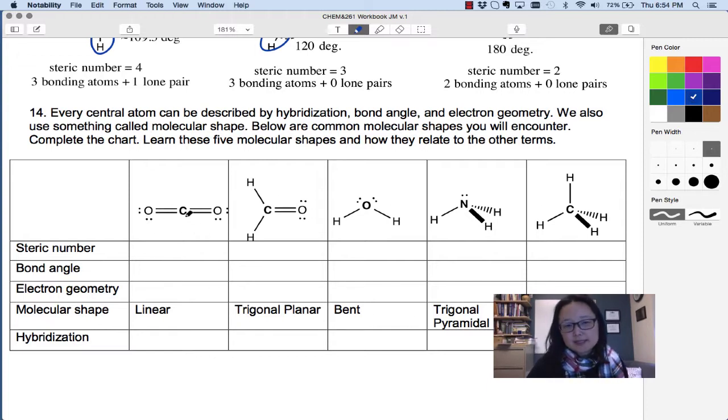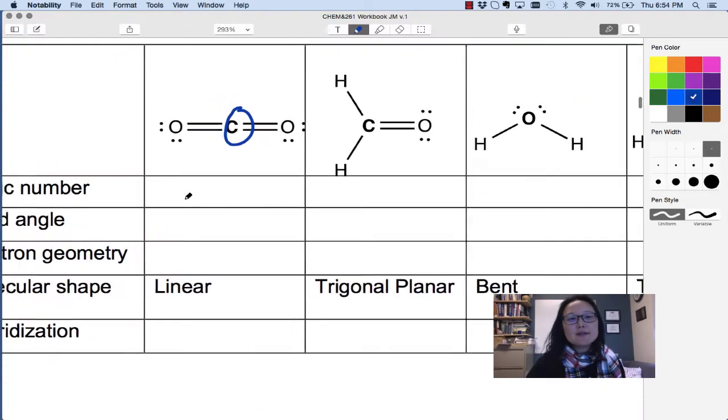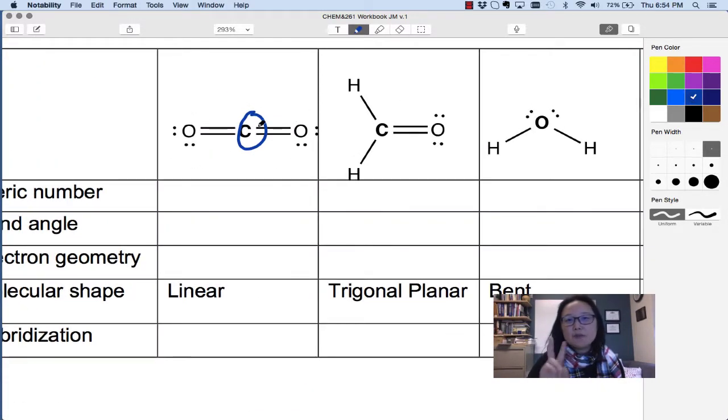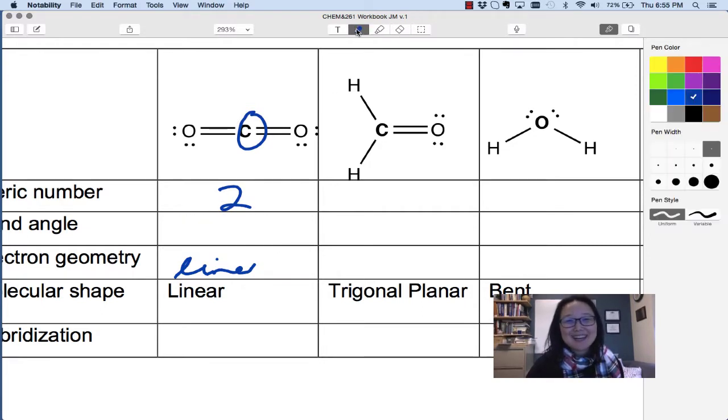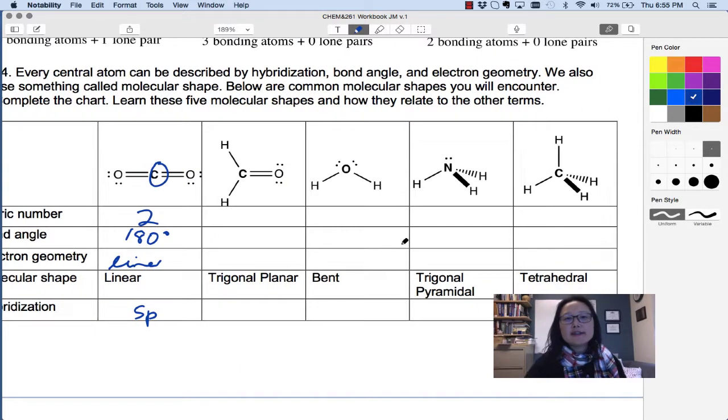So now here's some practice with that. Maybe we'll just do one as an example. CO2, I'm looking at the central atom to figure out the steric number. The steric number is going to be one, two. Two bonding atoms and no lone pairs. Steric number is two. Bond angle then is for these to be spread out. It's linear. Electron geometry is linear. Molecular shape is linear. Bond angle is an angle. It's a number. 180. 180 degrees. Hybridization of this carbon. SP. And I can tell because there's only two sigma bonds and two pi bonds. So go ahead and give these a try and let's come back and check our answers.